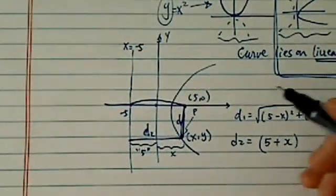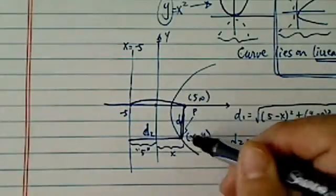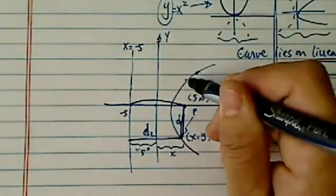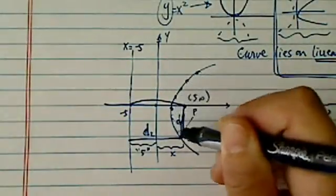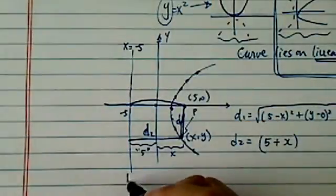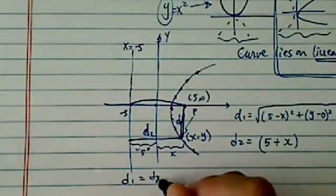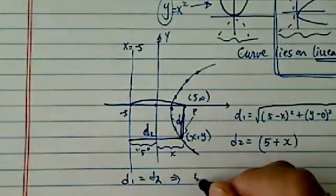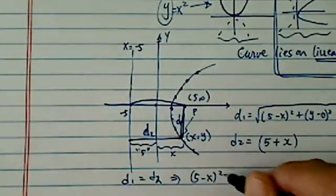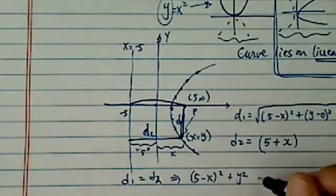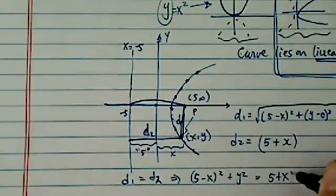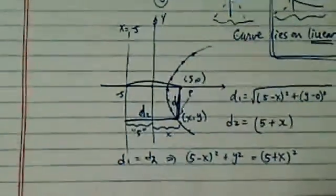We were given that the collection of P, every single point on this curve has a property that d1 equal to d2, so let's set it up. d1 equal to d2, then we have (5-x)² + y² is equal to (5+x)². So basically I square it on both sides.